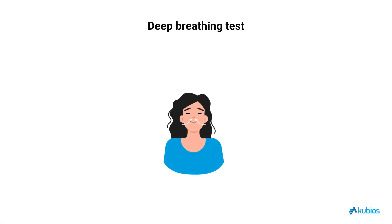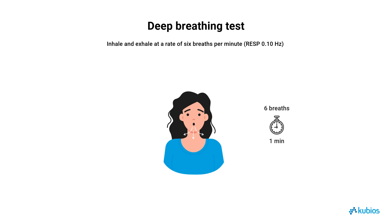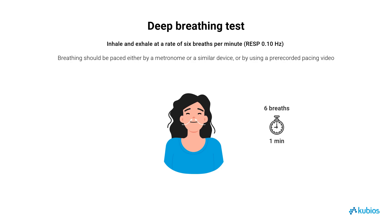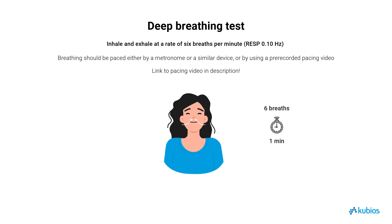Now we'll move on to the second test, the Deep Breathing Challenge. We'll explore how this maneuver elicits a characteristic heart rate response, providing further insights into ANS activity. The Deep Breathing Challenge requires participants to maintain a respiratory rate of 6 breaths per minute, equivalent to 0.1 Hz. This controlled breathing pattern should be paced using either a metronome, another suitable pacing device, or a pre-recorded deep breathing pacing video — for example, the one on our YouTube channel. You can find the link in the description.